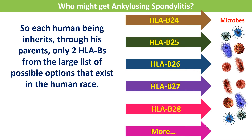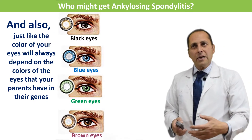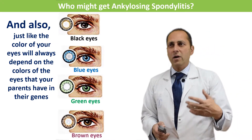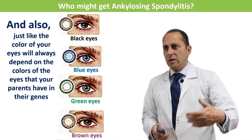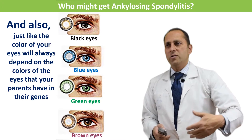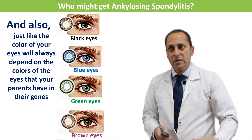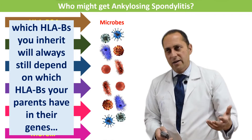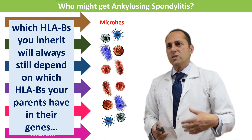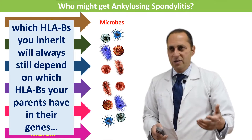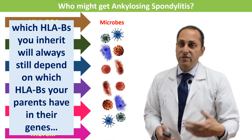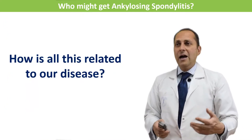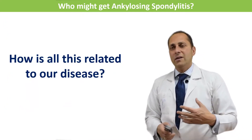Each human being inherits through his parents only two HLA-Bs from the large list of possible options that exist in the human race. And just like the color of your eyes will always depend on the eye colors your parents have in their genes, which HLA-Bs you inherit will always depend on which HLA-Bs your parents have in their genes.